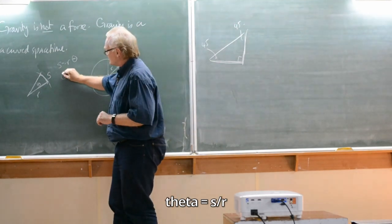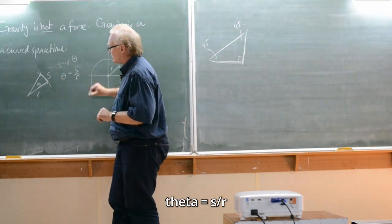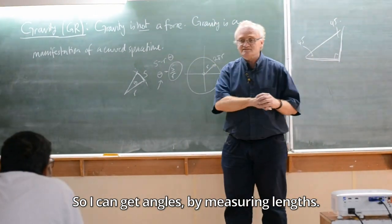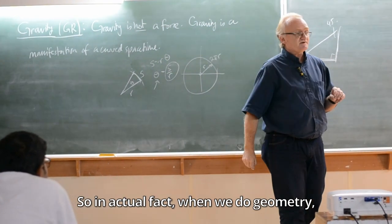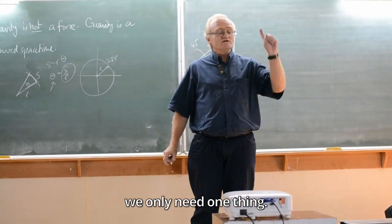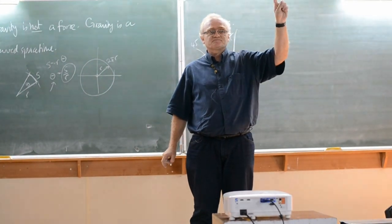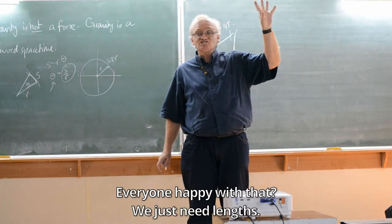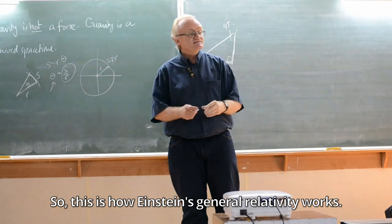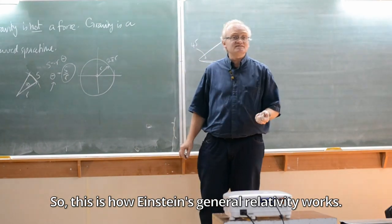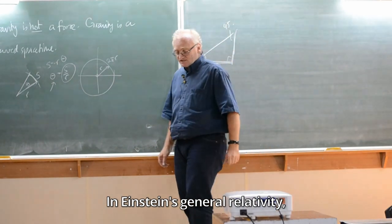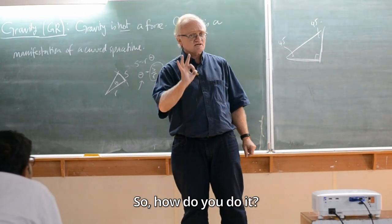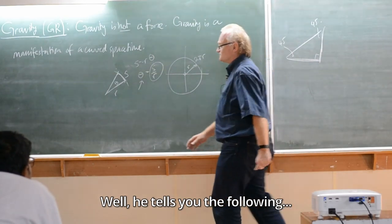So in actual fact, when we do geometry, we only need one thing: a method to measure lengths. Everyone happy with that? We just need lengths. This is how Einstein's general relativity works. In Einstein's general relativity, Einstein gives you a way to measure lengths. How do you do it? Well, he tells you the following.